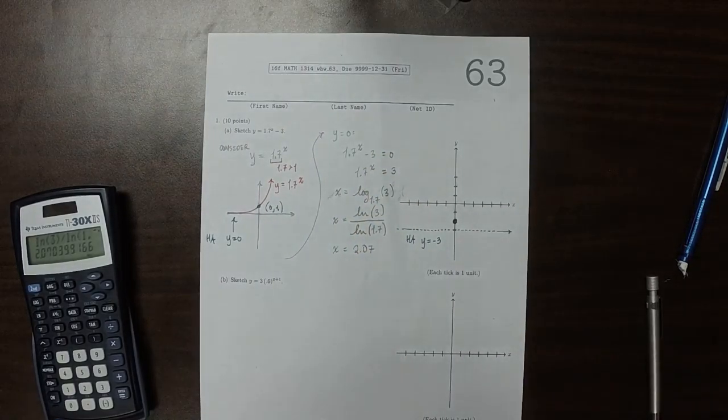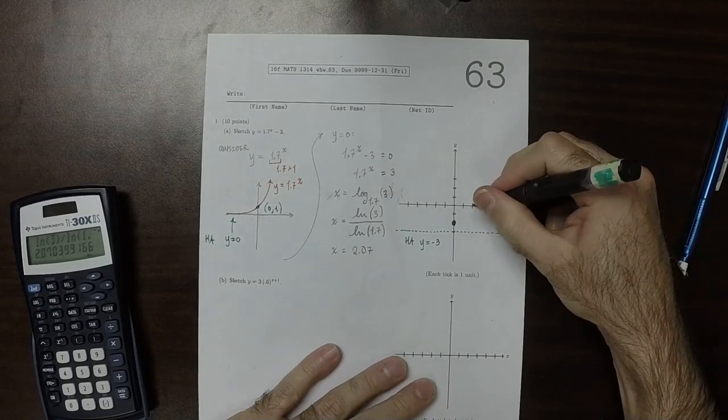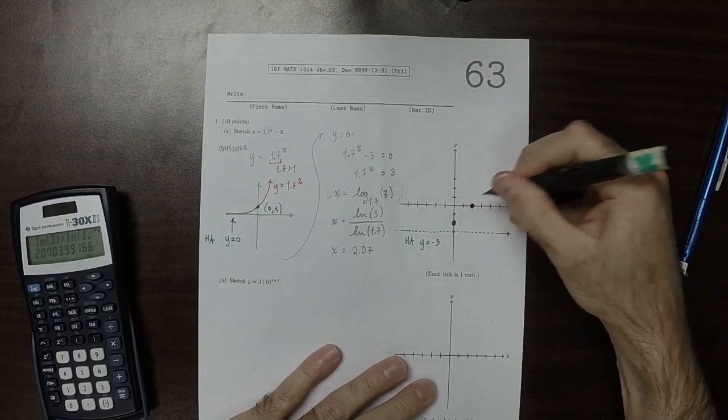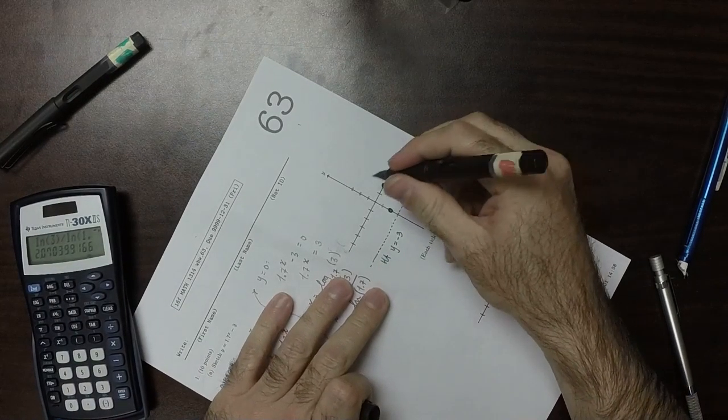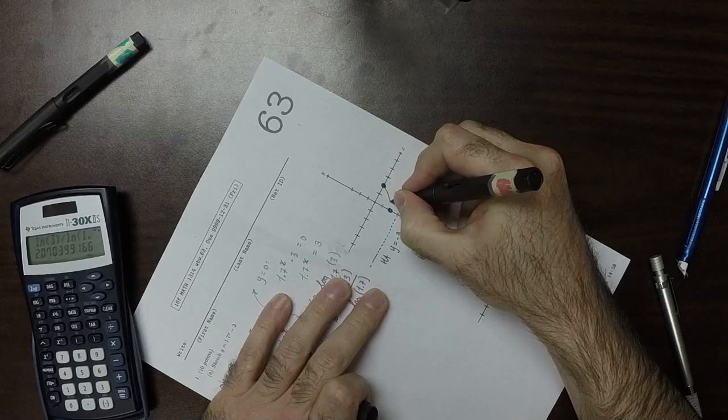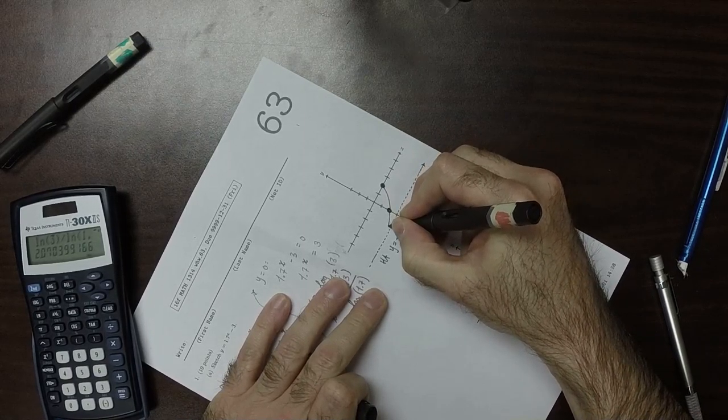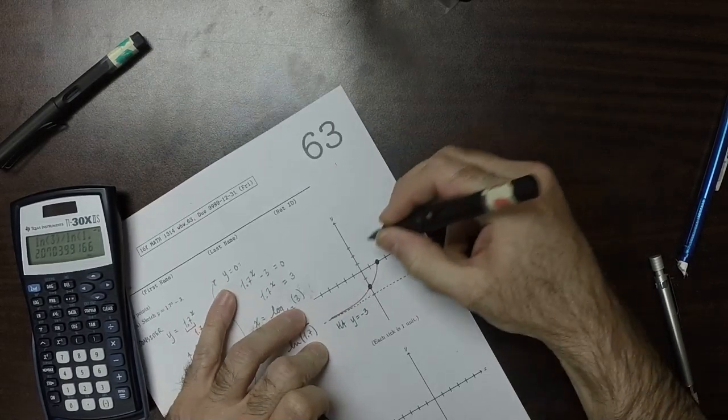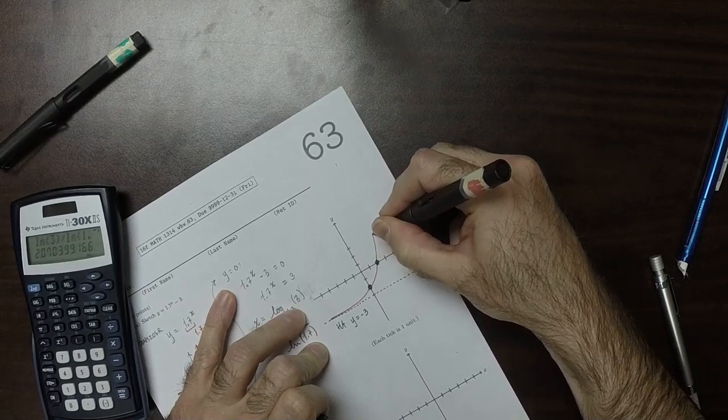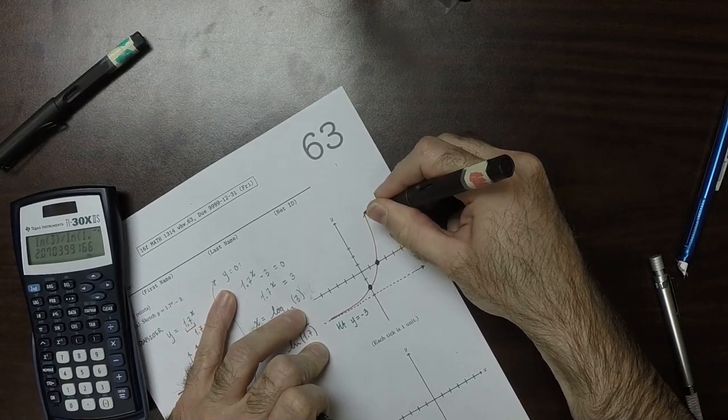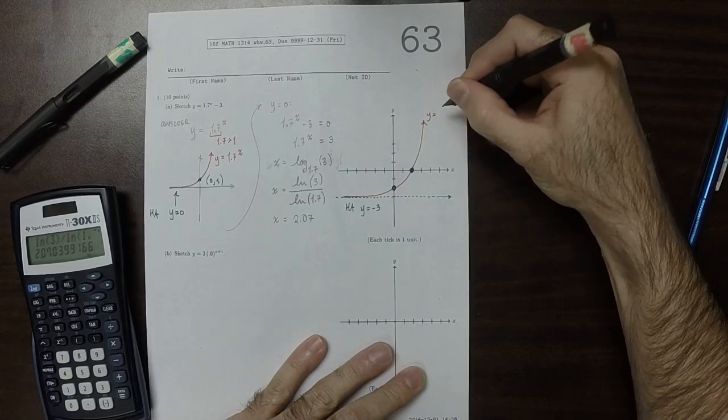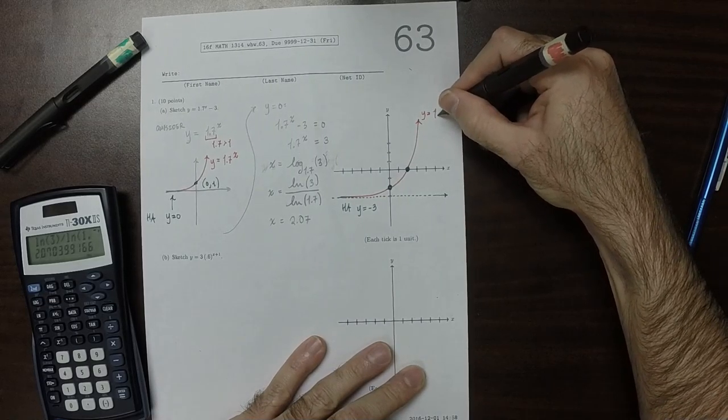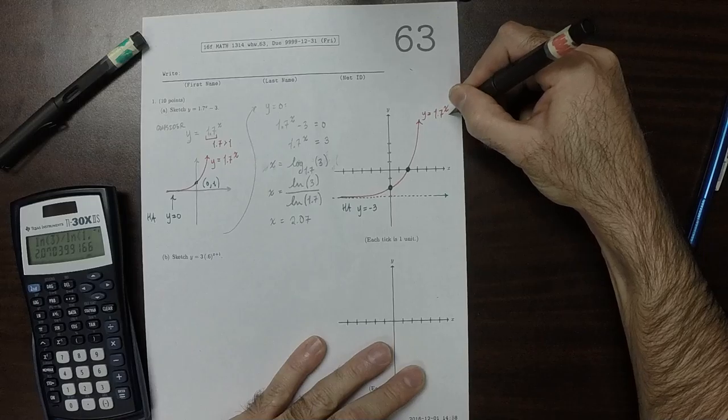So that means that we know another point. It's about right here. So plotting this. That means that's y = 1.7^x minus 3.